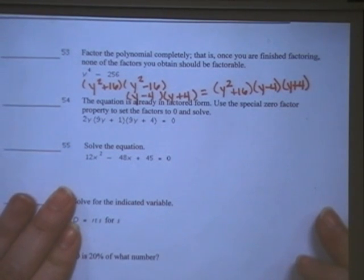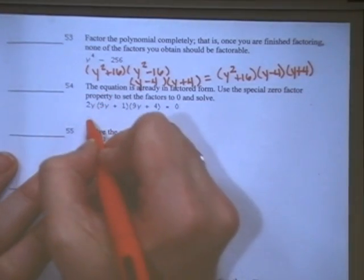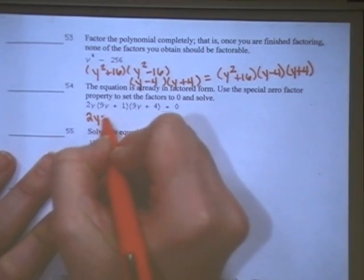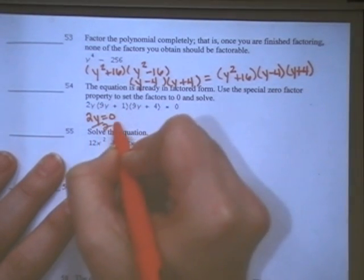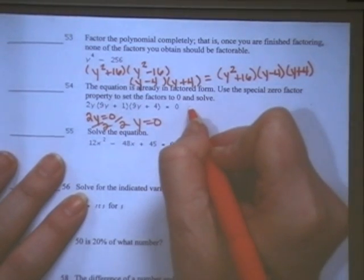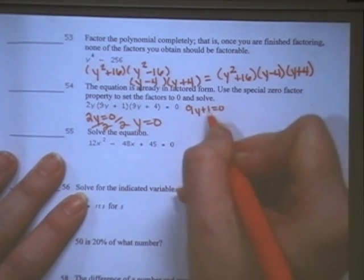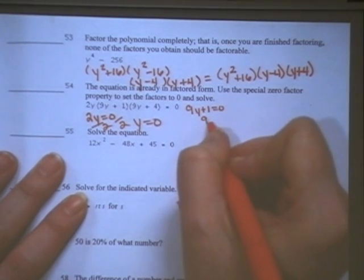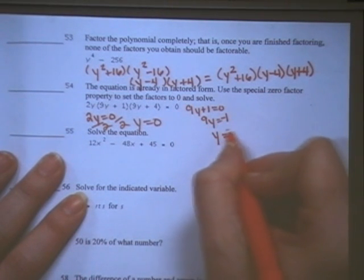For 54, the equation is already in factor form. Use the special zero factor property to set the factors equal to 0 and solve. So if they already have 2y, I just set it equal to 0 and divide by 2. 0 divided by anything is 0. There's one answer. The second parenthesis has 9y plus 1, set that equal to 0, subtract my 1, 9y equals negative 1, and divide by 9, y is equal to negative 1 ninth.